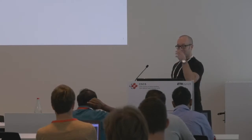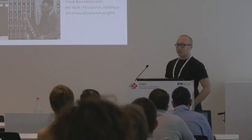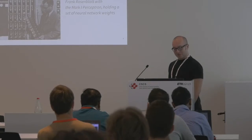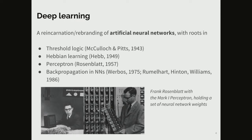Deep learning is one of the themes in this summer school, so I thought it would be good to provide an overview before going into the automatic differentiation part. I'll just cover basic concepts in deep learning. It is a reincarnation of artificial neural networks, a very old idea dating back to the 1940s and 50s. Here you see Frank Rosenblatt, the inventor of the perceptron, which was by the way a machine instead of an algorithm.